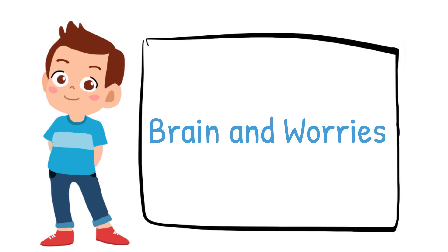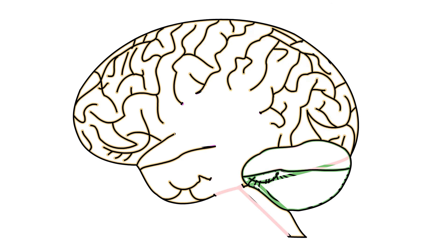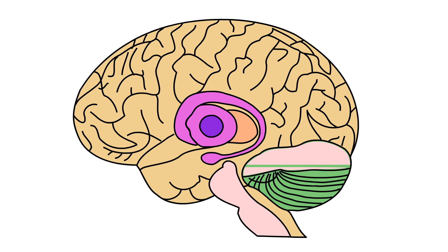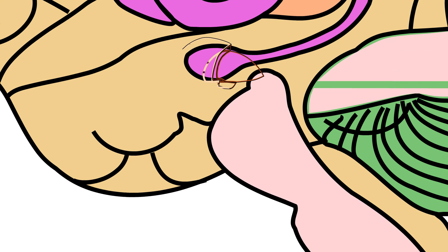I'd like to show you some really interesting stuff about worries and how the brain works. Imagine this is your brain. Let's take a closer look at this tiny little section down here that's shaped a bit like an almond.